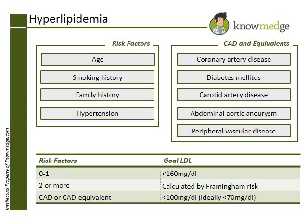Choice B, CAD carries the same recommendations, as does choice C, a 2.5 cm abdominal aortic aneurysm, and choice D, severe carotid artery stenosis.